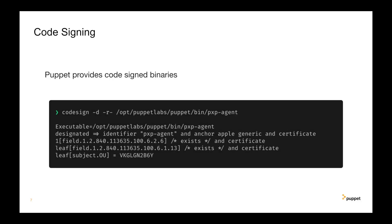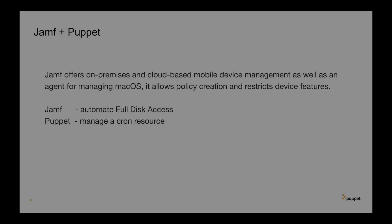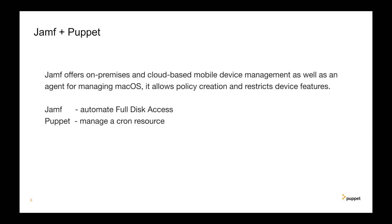Puppet Agent provides code-signed binaries for all our supported macOS versions. For a better overview of all of the moving parts, I'll show how to manage Puppet executable permissions with Jamf and to enable Puppet to properly manage the cron resource on macOS.